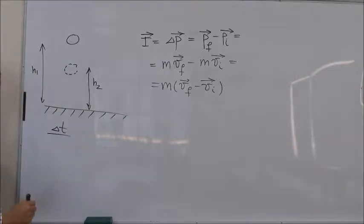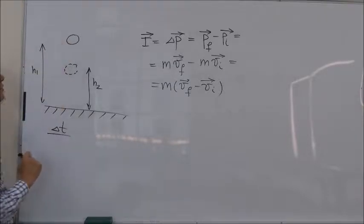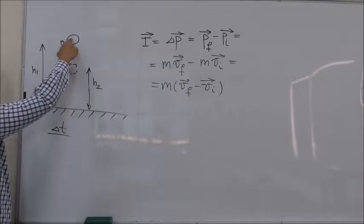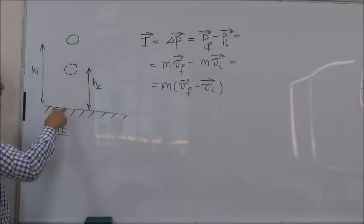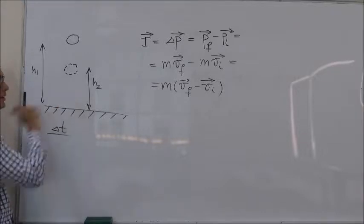Now let's first find the magnitudes of V final and V initial. Let's look at the V initial first. V initial is the velocity of the ball just before it hits the ground.